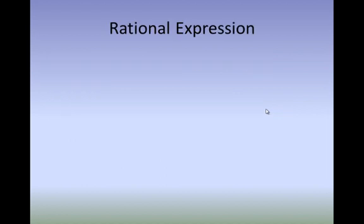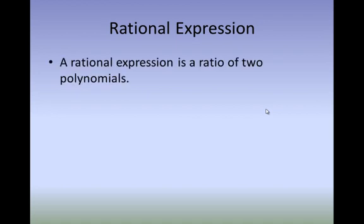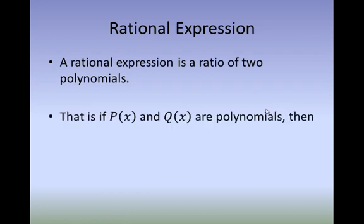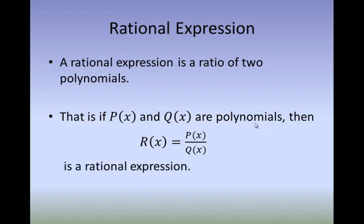Let's first define what a rational expression is. A rational expression is a ratio of two polynomials. That is, if P of X and Q of X are polynomials, then R of X equal to P of X over Q of X is a rational expression. As you can see, R of X is a rational expression because P of X is a polynomial over another polynomial Q of X.